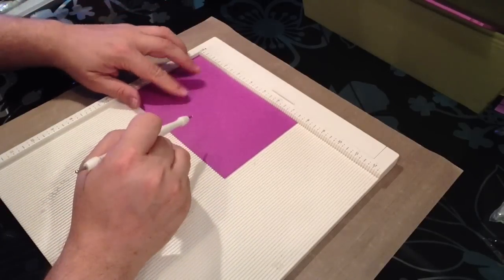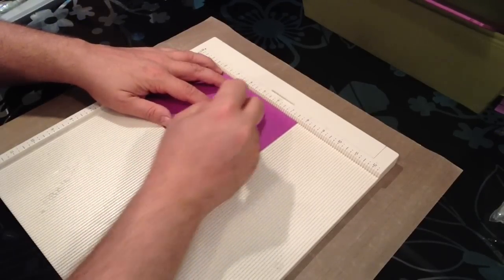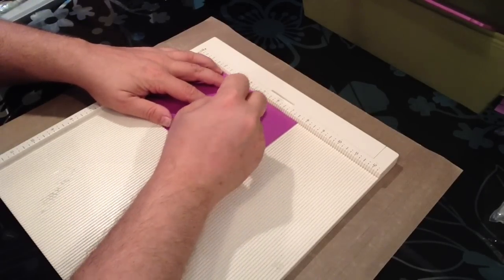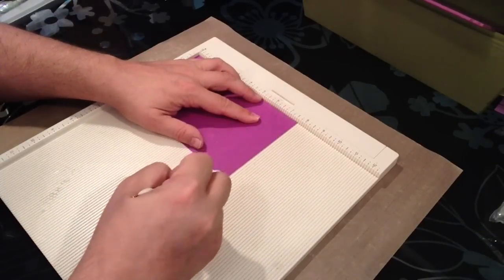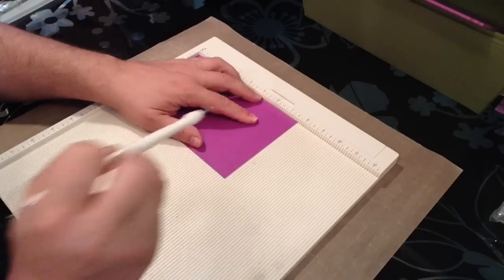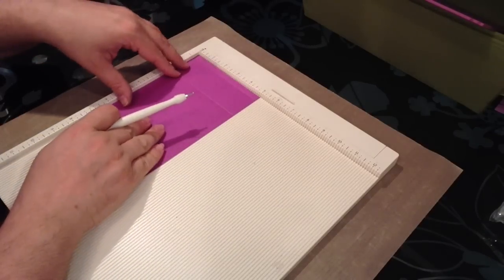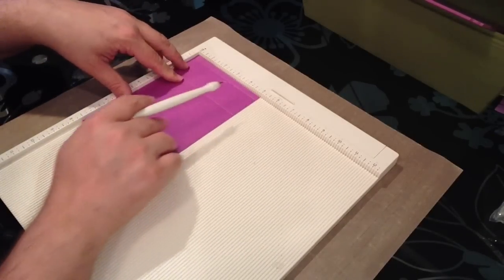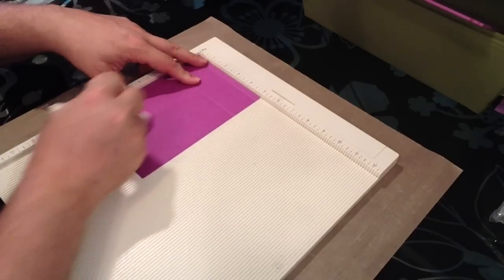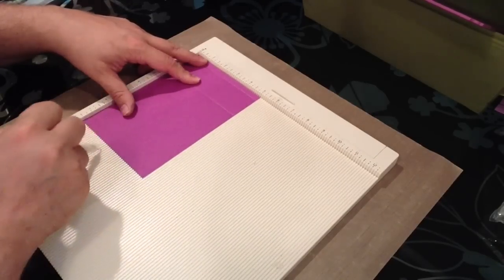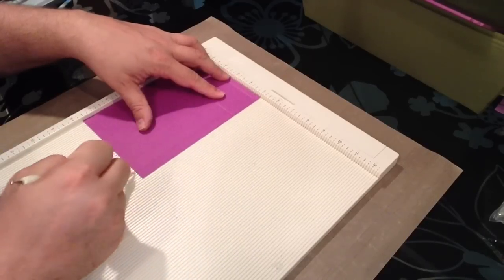Five and five-eighths, and seven and a quarter. Then I'm going to turn it so that little score is at the top and now I'm on the five inch side. I'm going to score at two and a quarter, four and a half.